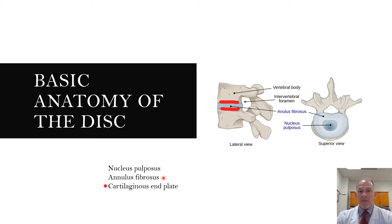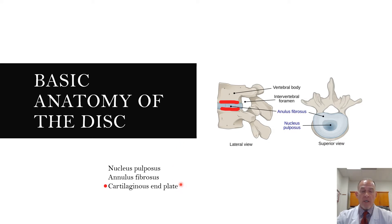The annulus fibrosis is the outer part of the disc. We have the inner fibers and the outer annular fibers. The third part of the disc, which is very important, is the cartilaginous end plate. We have one on the bottom part and one on the top part of the disc. The cartilage end plate is the highway through which nutrients travel into the disc and waste products are exited from the disc — it's a very important structure.